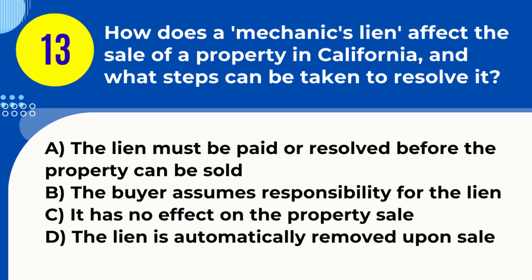Question 13. How does a mechanic's lien affect the sale of a property in California, and what steps can be taken to resolve it? A. The lien must be paid or resolved before the property can be sold. B. The buyer assumes responsibility for the lien. C. It has no effect on the property sale. D. The lien is automatically removed upon sale.